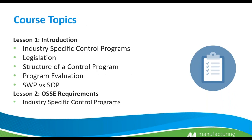In lesson one, our course topics are going to be industry specific control programs. We are going to review some of the legislation, go over what the structure of a control program is, look at what needs to be needed for a program evaluation, and I have added an additional slide that differentiates between an SWP or safe work program and a standard operating procedure. Then in lesson two, we are going to go over the OCIE requirements and the industry specific control programs.